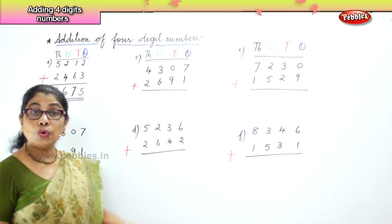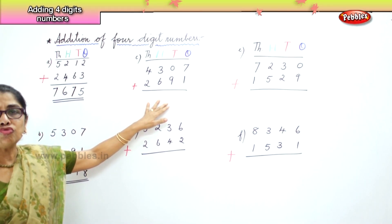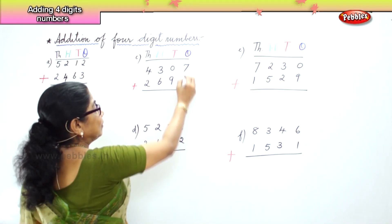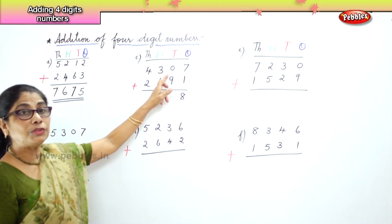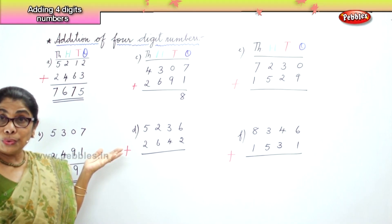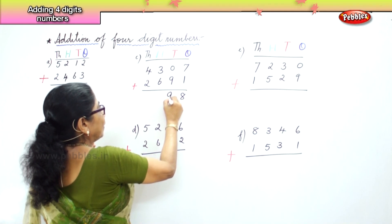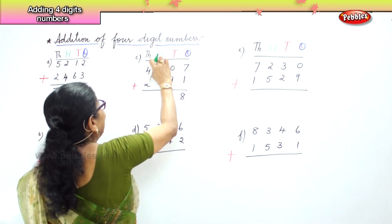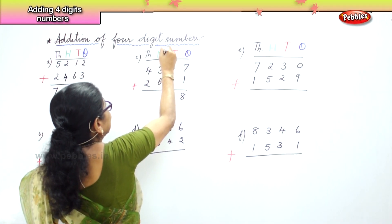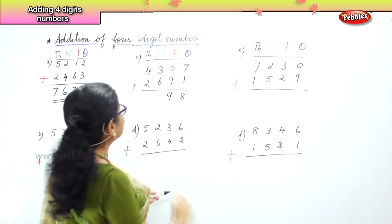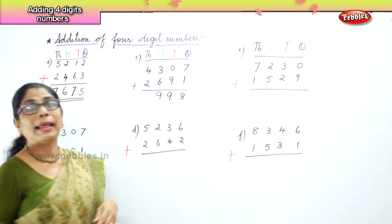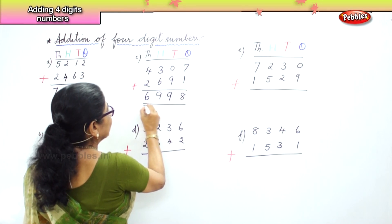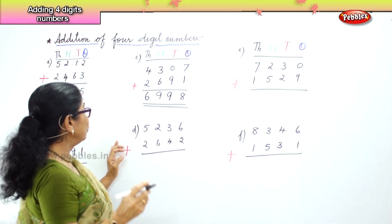The next sum is four thousand three hundred and seven plus two thousand six hundred and ninety-one. In the ones place, you have seven ones and one one — seven plus one is eight. In the tens place, you have zero and nine — zero tens plus nine tens is just nine itself. In the hundreds place, you have three hundred and six hundred — three plus six is nine hundred. In the thousands place, four plus two is six thousands.